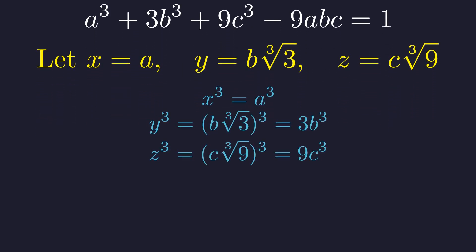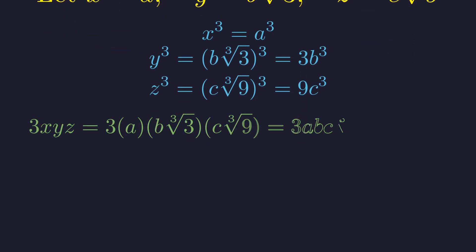If we cube these terms, x cubed is a cubed, y cubed is 3b cubed, and z cubed is 9c cubed. And the product 3xyz simplifies to 9abc.